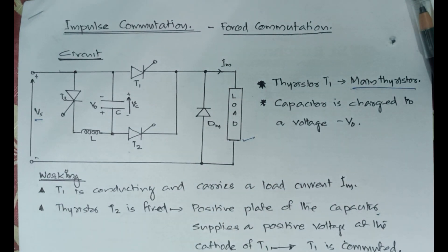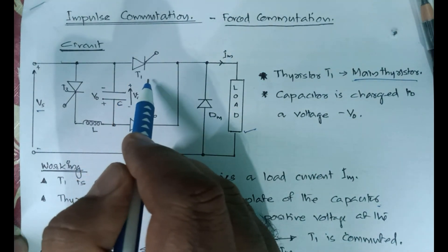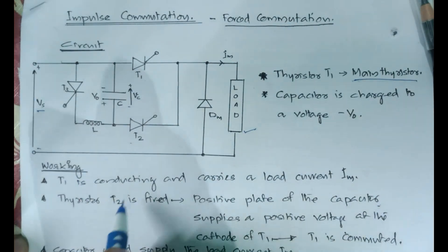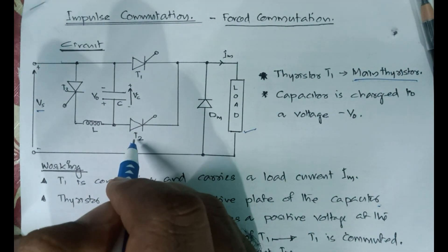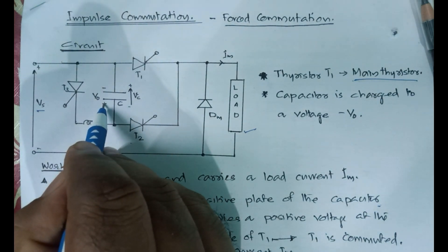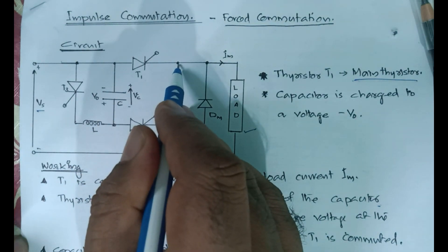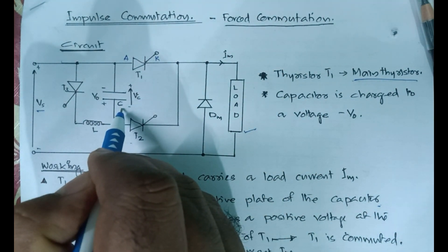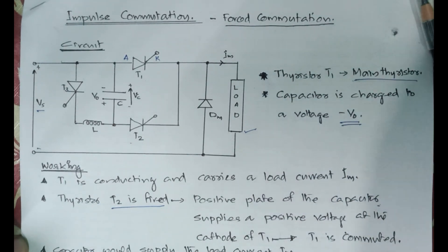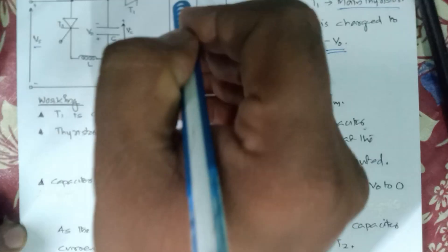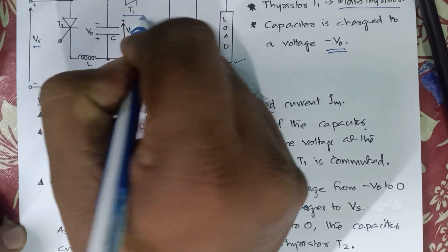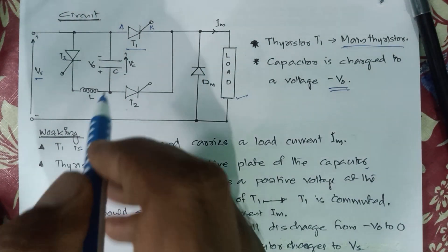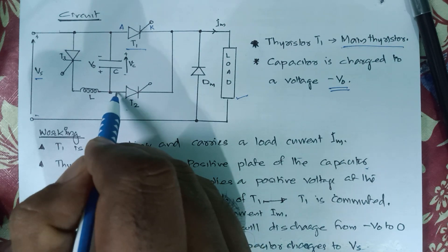Thyristor T1 is carrying the load current Im. When we want to commute T1, we fire thyristor T2. When T2 is fired, the positive plate of capacitor C supplies a positive voltage at the cathode of thyristor T1. This is because capacitor C was previously charged to a voltage minus V0. When this negative voltage appears across the cathode, thyristor T1 is commuted. Because T1 is commuted, the load current will not become zero because T2 is closed and acting as a closed switch.